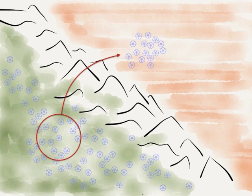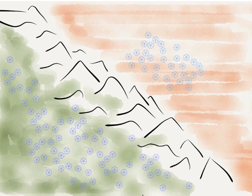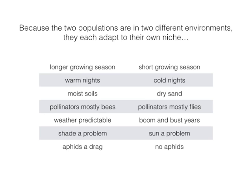The two environments differ. On the coastal side of the mountain, the environment is different from the desert side where less rain falls. On the coastal side, there's a longer growing season, whereas on the desert side there's a shorter growing season. On the coastal side the nights are warm, whereas on the desert side the nights are cold.